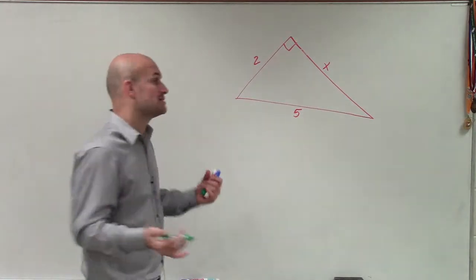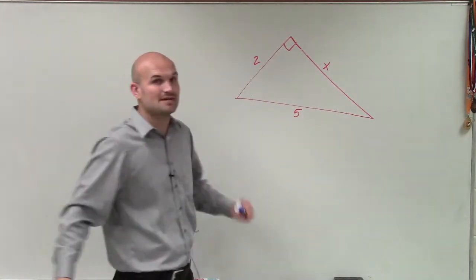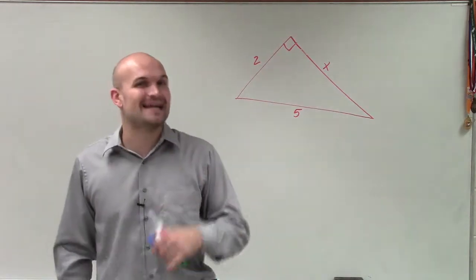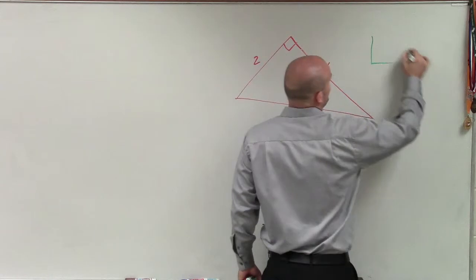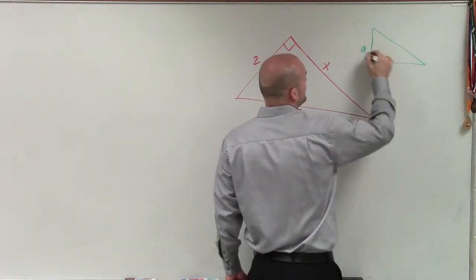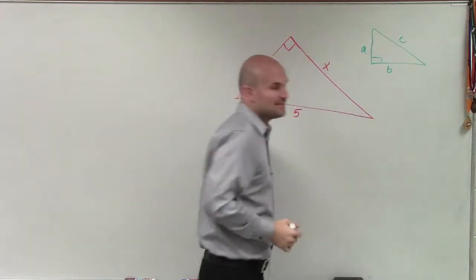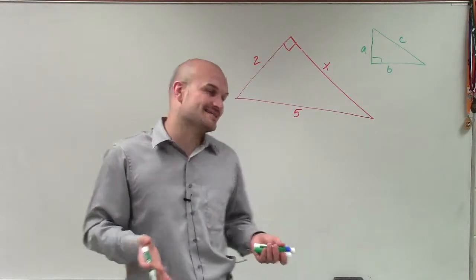And the only way to determine if it's a right triangle is if I have a 90-degree symbol or one of these boxes that's telling me it's 90 degrees. Now, just because we don't have a triangle that's written in this standard form that we like doesn't mean we can't figure out what each one of these sides are.